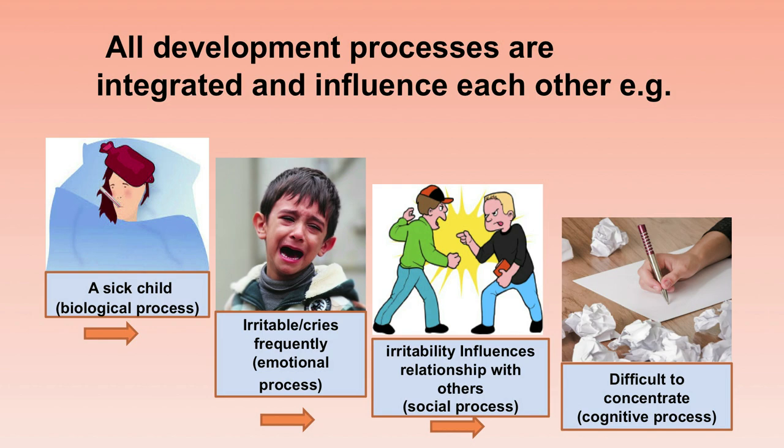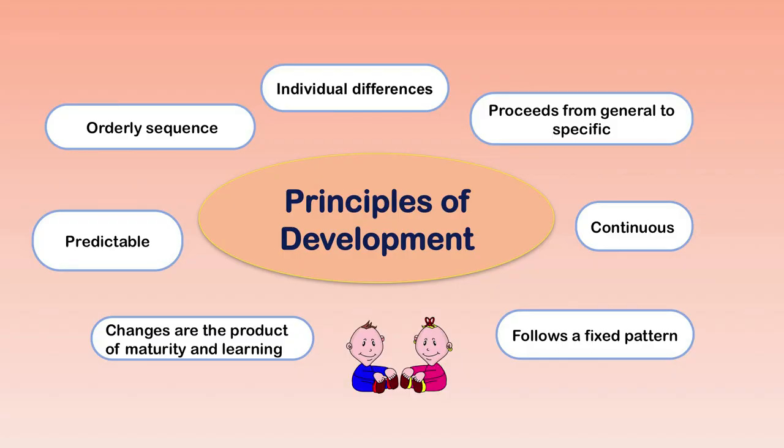Development follows a certain pattern. The seven basic principles of development are: orderly sequence, individual differences, proceeds from general to specific, it is continuous, follows a fixed pattern, change is the product of maturity and learning, and development is predictable.